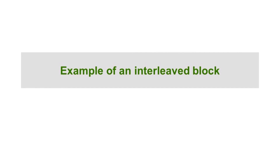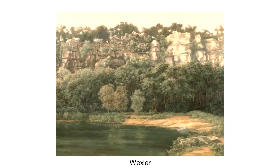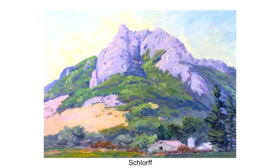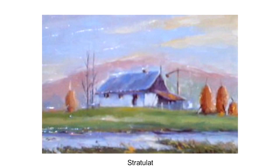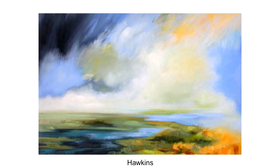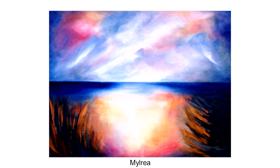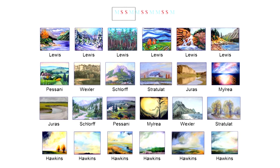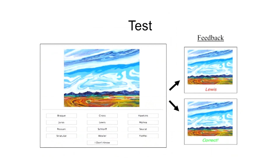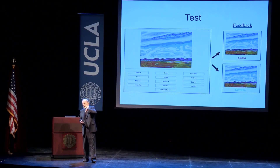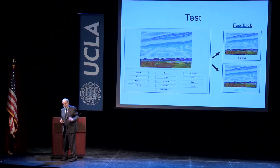In an interleaved condition on the other hand, you'd see the 6 individual paintings by a given artist intermixed with paintings by the other artists — like seeing a Pisani, a Wexler, a Schlorf, a Stratulat, Hawkins, Milraya. They go through those 72 paintings total. On the final test, they see completely new paintings and have to say who painted each one — they haven't seen those before. They have to extract the style of a given painter.